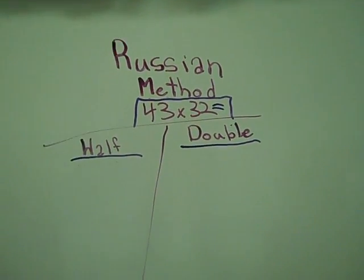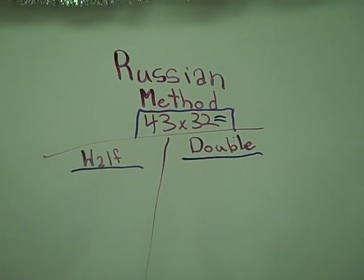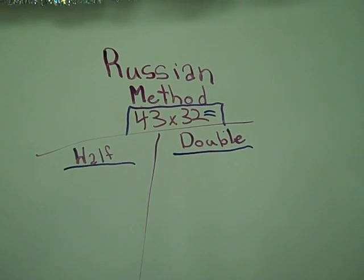This is the Russian method of multiplication. So we have 43 times 32. We have a half side and a doubling side.